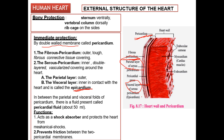In between the parietal layer and the visceral layer, there is a gap called the pericardial space. This pericardial space is filled with a fluid called pericardial fluid, which is about 50 ml. The function of this fluid is that it acts as a shock absorber, protects the heart from mechanical shock, and prevents friction between the two pericardial membranes.